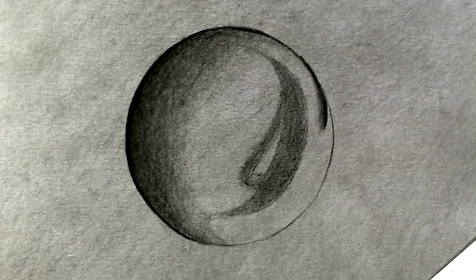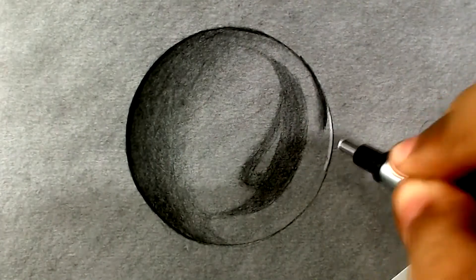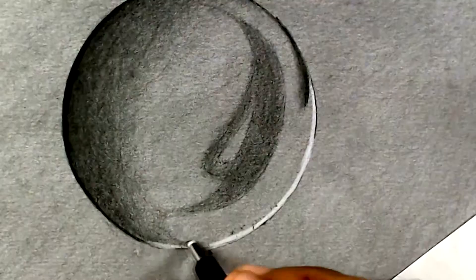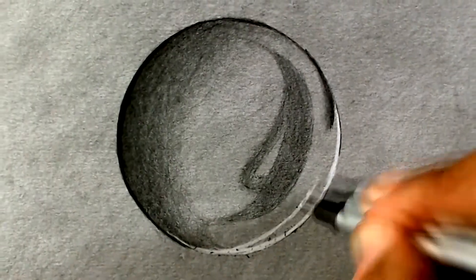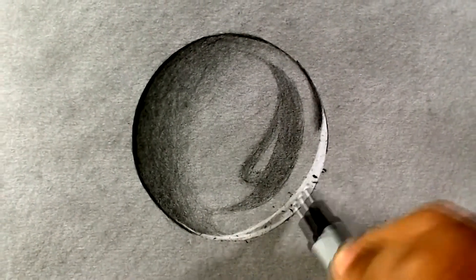And once we've created all the dark details, all the dark layers, we're going to use the pen eraser to create all the lightest details, starting off with the opposite side from the first dark layer that we created at the beginning of the video.